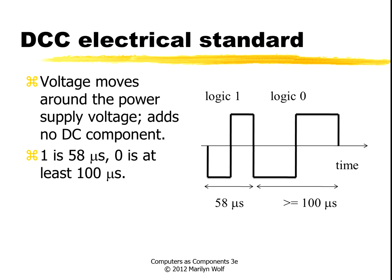The voltage is modulated around the power supply voltage, so the signal you send on the track does not add a DC component. Logic zero and logic one are distinguished by the length of this symmetric pulse. They both have a downward component and an upward component of equal length, so there's no DC component. Logic one bits are 58 microseconds, and a logic zero is at least 100 microseconds — it's the length of this downward-upward pulse pair that distinguishes a zero from a one.